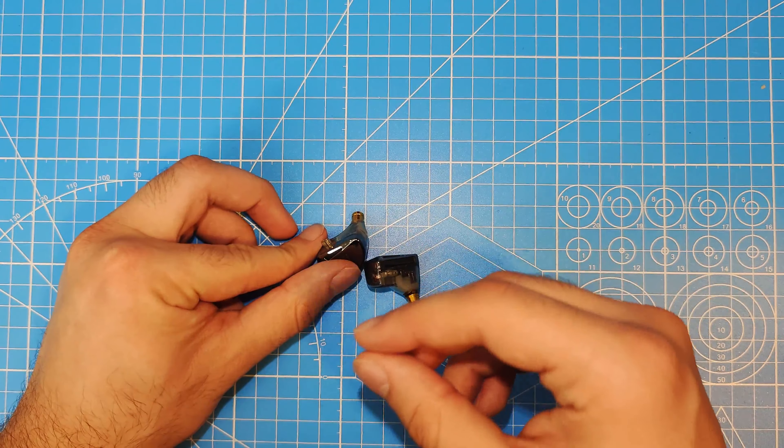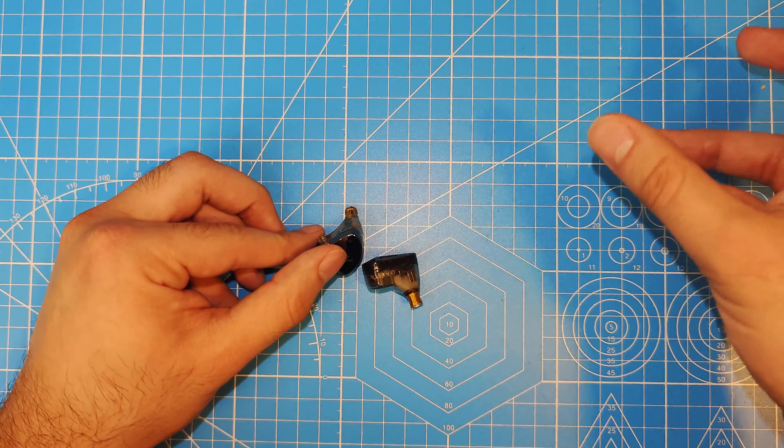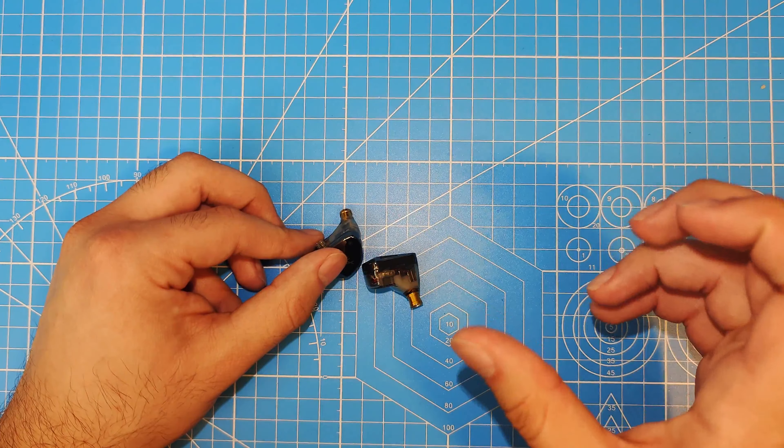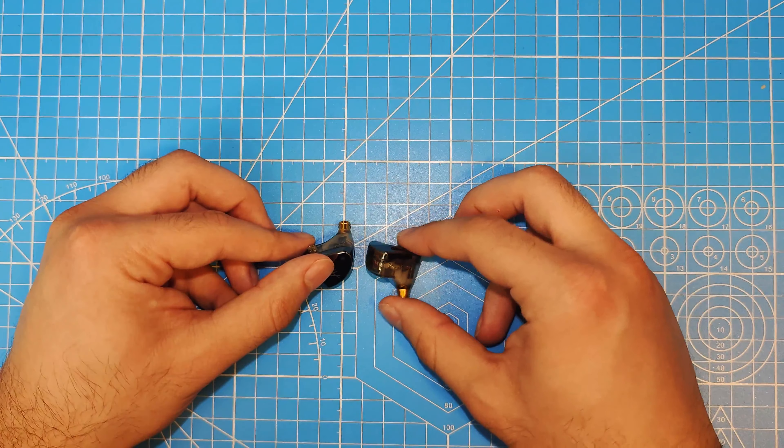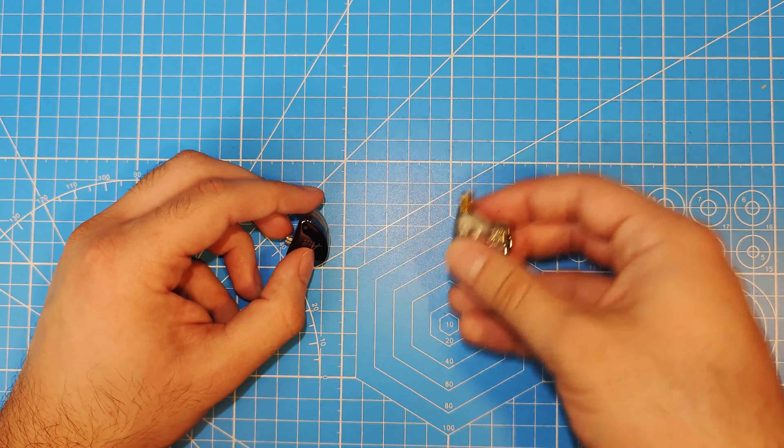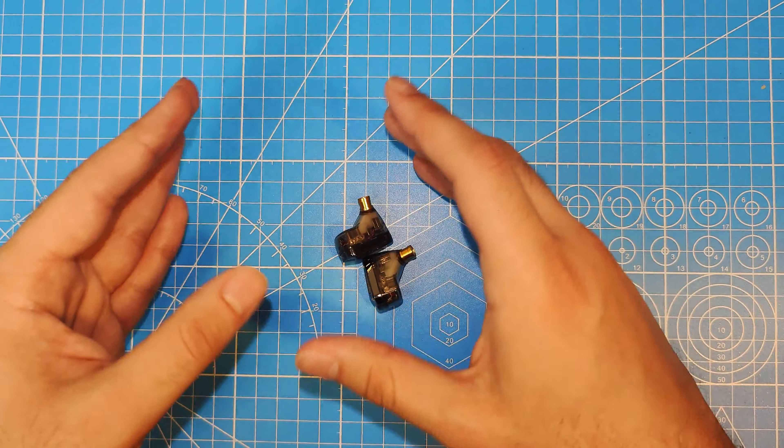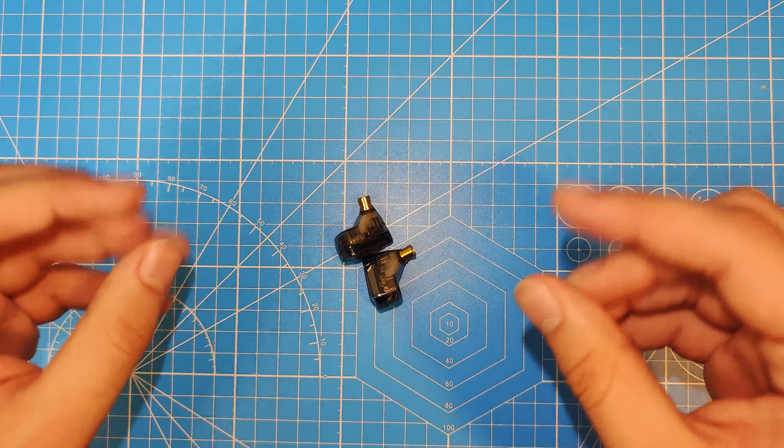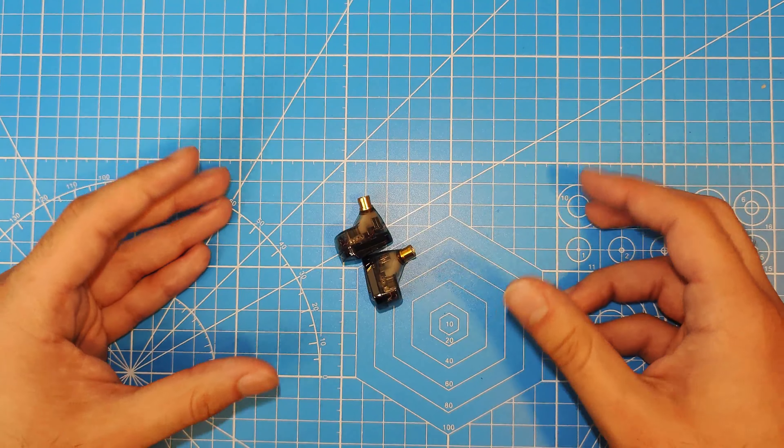So, overall, the BA timbre wasn't a huge issue, but it's something I definitely noticed. Especially with the stock tips, with the spin fits, it does kind of make it sound a little bit more natural. But it still does have that metallic tang to it. So, it is another issue to add on to other issues the set has. Really, a big issue, though, for me was the lack of body in the track overall. Note weight was poor. Anyway, going on to the treble.